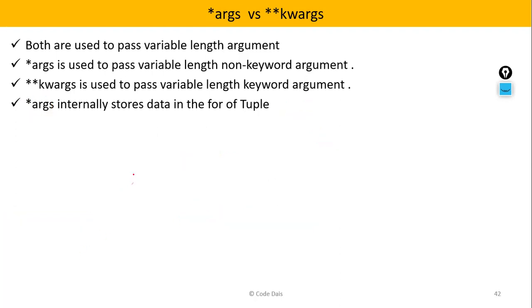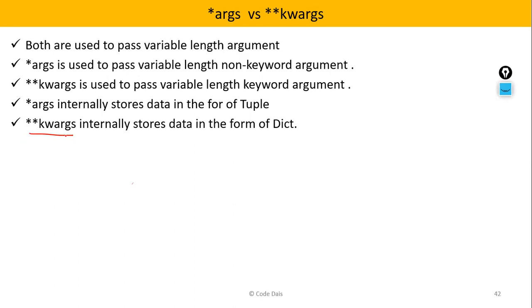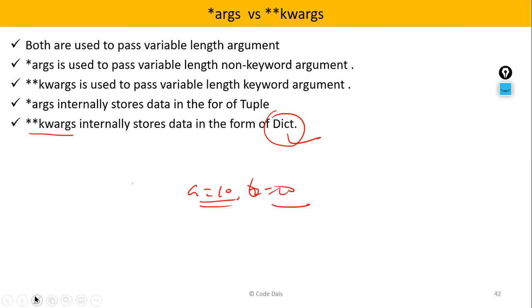In the case of **kwargs, the data will be stored internally in the form of a dictionary, because we are passing key-value pairs. Since we pass key-value pairs, that's why it is stored in the form of a dictionary.